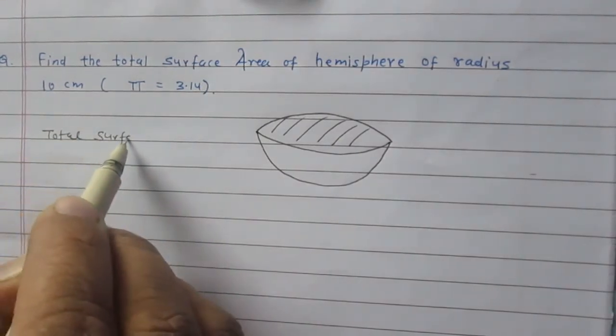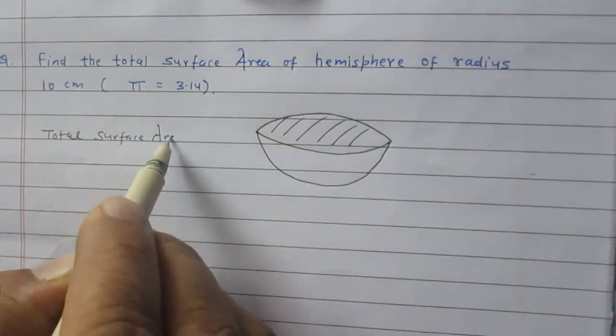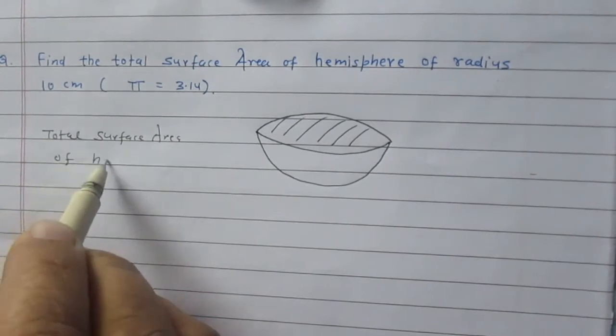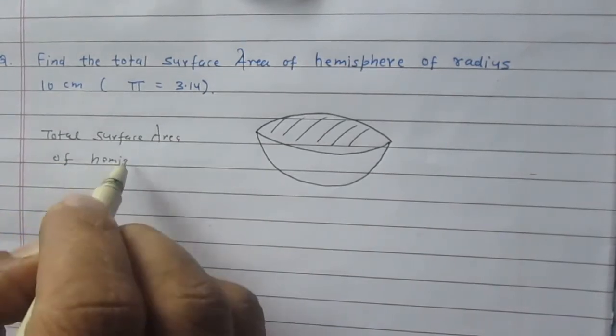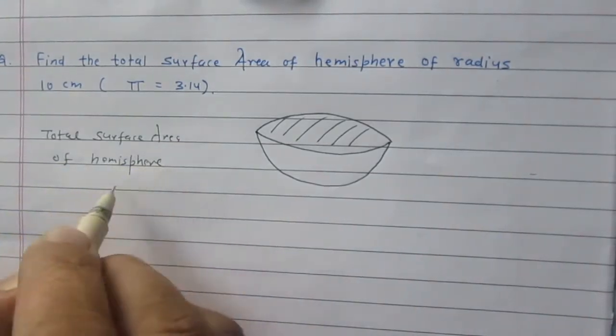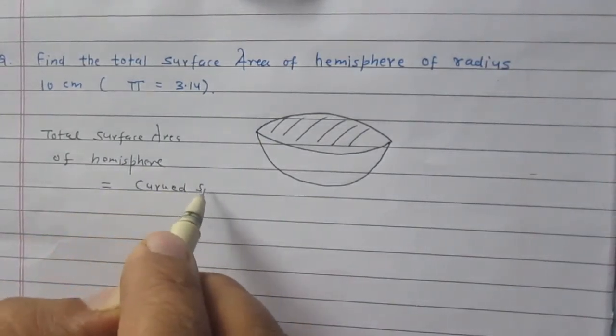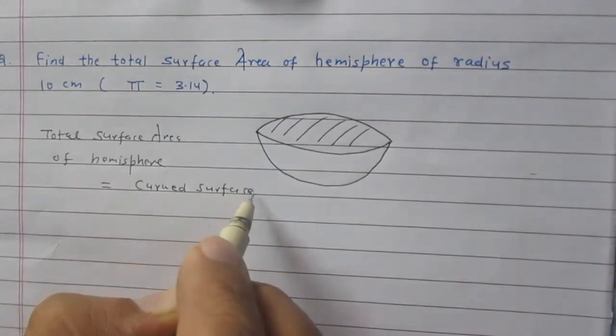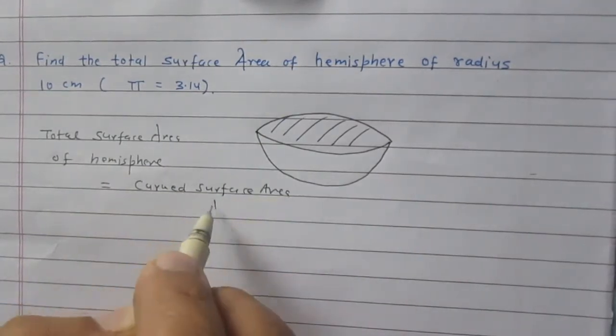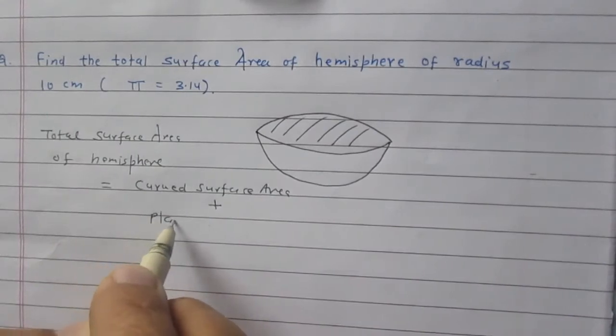So, total surface area of hemisphere is equal to its curved surface area plus its plane surface area.